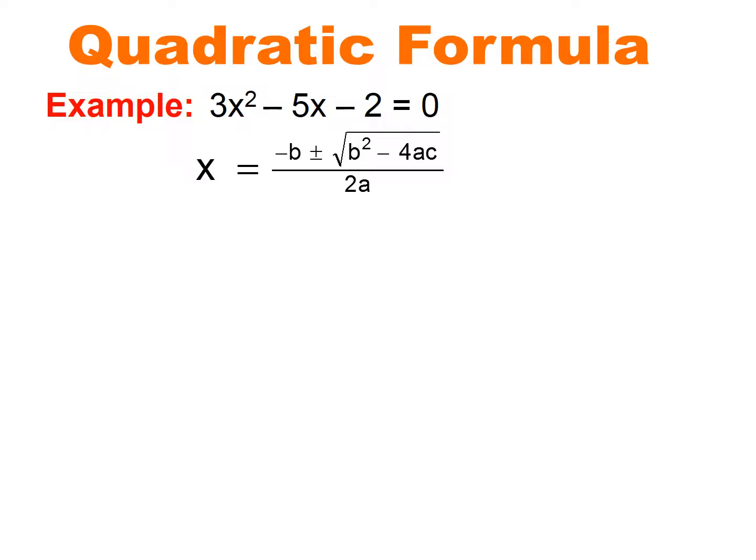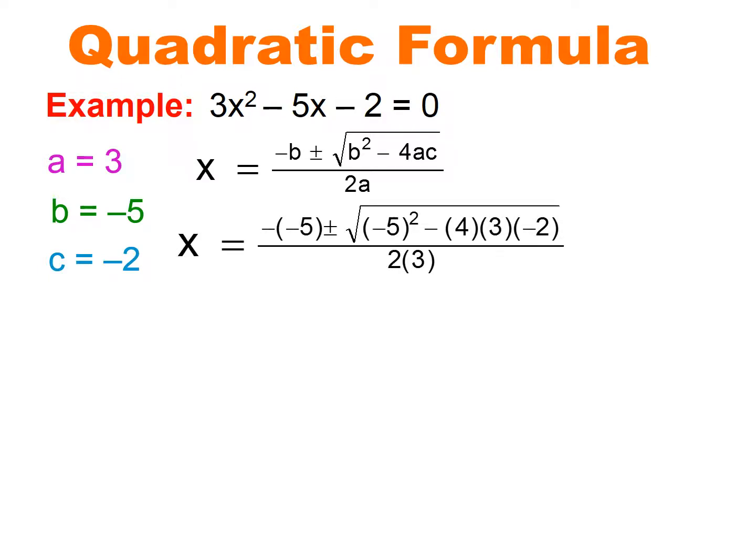So we're going to do an example. The first thing I'm checking is whether my quadratic equation is in standard form. It is, because it goes from x squared to the constant and equals 0. The next thing I want to identify are the coefficients of the variables and the constant — that will label my a, b, and c. The a value is 3, it's the coefficient of x squared. My b value in this case is negative 5, because we have minus 5x. And my c value is negative 2.